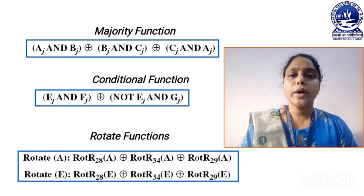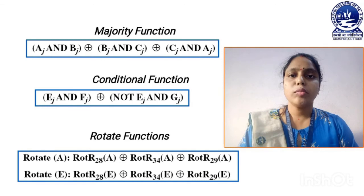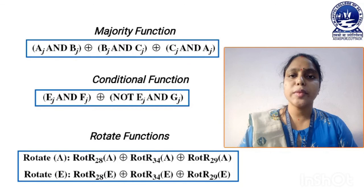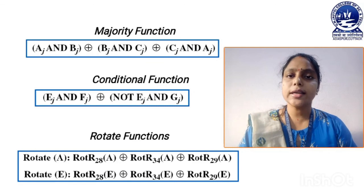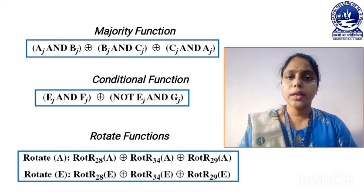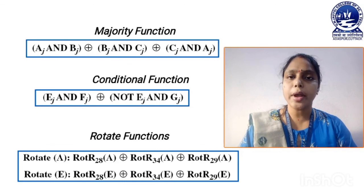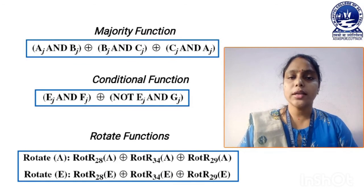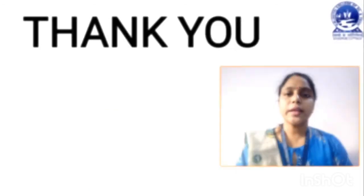This is all about the SHA-512 algorithm. You must remember that in SHA-512, it always takes a message which length is less than 2 to the power 128 bits, and it generates a message digest which size is 512 bits. If you have any doubt regarding this SHA-512 algorithm, then you can ask me through the comments. I will reply and discuss your doubt. Thank you for watching.